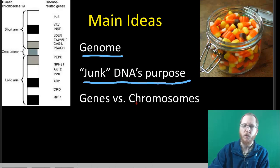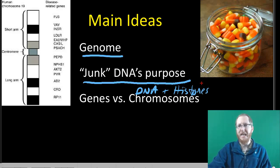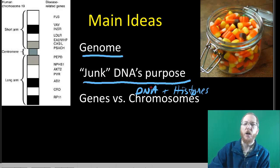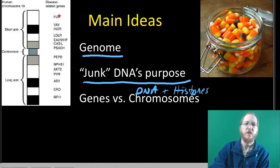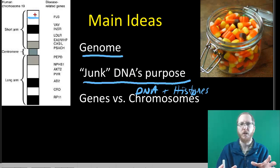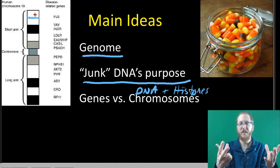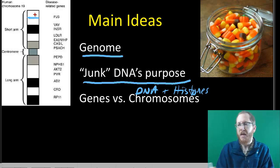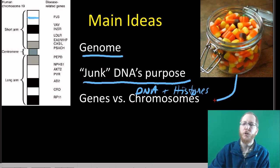Our chromosomes are DNA wrapped around proteins called histones, which helps compact it when needed. The genes are sections of that DNA. You can see here on chromosome 19 — a smaller one — just the disease-causing genes listed, and there are quite a few on just this one chromosome. Each gene has its own particular spot, its own location, where you'll always find one of its alleles.